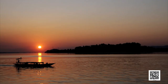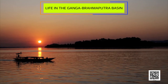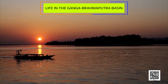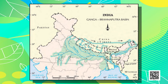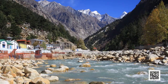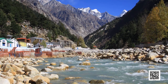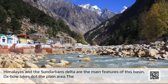Now we will move further and talk about life in the Ganga-Brahmaputra Basin. The tributaries of rivers Ganga and Brahmaputra together form the Ganga-Brahmaputra Basin in the Indian subcontinent. The basin lies in the subtropical region, situated between 10 degree north to 30 degree north latitudes. The tributaries of the river Ganga — Ghaghra, the Son, the Chambal, the Gandak, the Kosi — and the tributaries of Brahmaputra drain it. The plains of the Ganga and the Brahmaputra, the mountains and foothills of the Himalayas, and the Sundarban Delta are the main features of this basin.